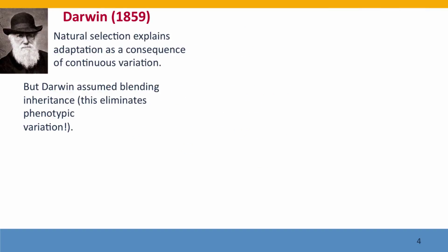Darwin came along and explained adaptation of different species as a consequence of natural selection acting on continuous variation in small populations — that natural selection would always slightly favour minor differences in these continuously varying traits, gradually shifting the population to better and better adaptation. But there was a problem underlying Darwin's theory: like his contemporaries, he assumed that inheritance occurred by blending. This is a big problem for evolution by natural selection because blending inheritance eliminates phenotypic variation. Gradually all the offspring are going to look like the average instead of the extremes, and natural selection will have no variation to act on.